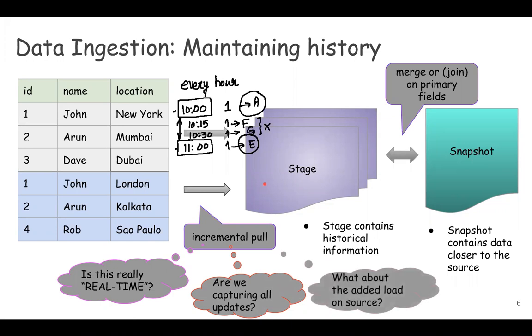And what about the load we are adding on the source? If we try to run this aggressively, say every 30 minutes or every 15 minutes we do incremental pull, we are adding load on our source RDS. Our source RDS is under constant stress because of the ingestion processes.